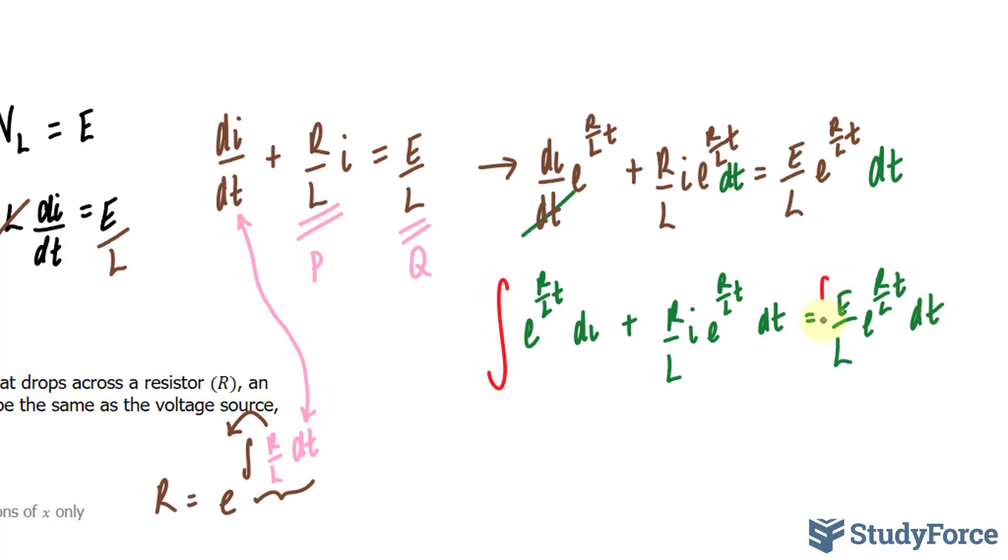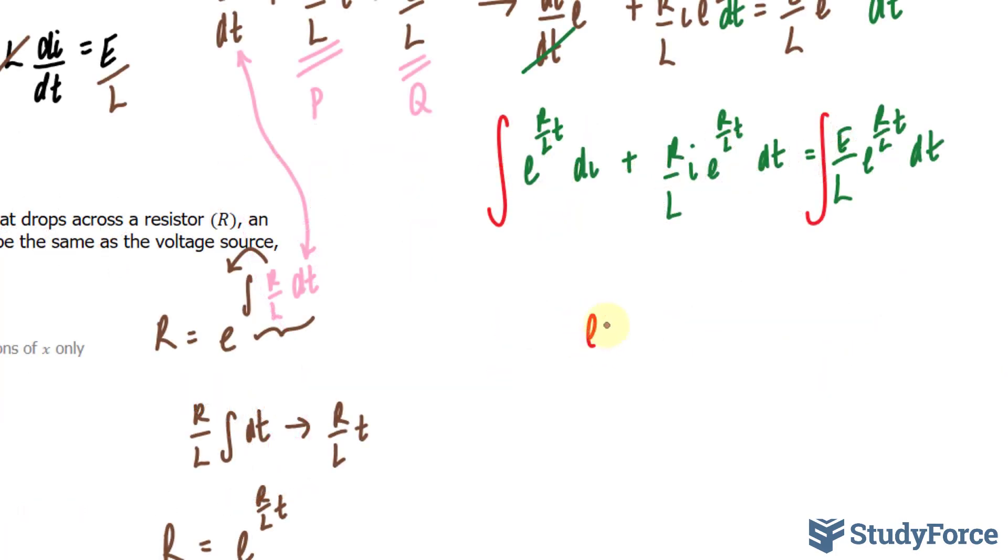Integrating the left side and integrating the right side. The reason why I found the integrating factor is because if I take the integrating factor, e to the power of R over LT, and multiply it by the dependent variable, in our case that was current, and if you take the derivative of this product, you'll end up with this expression as your derivative. Therefore, if we integrate the left side, we will end up with the following.